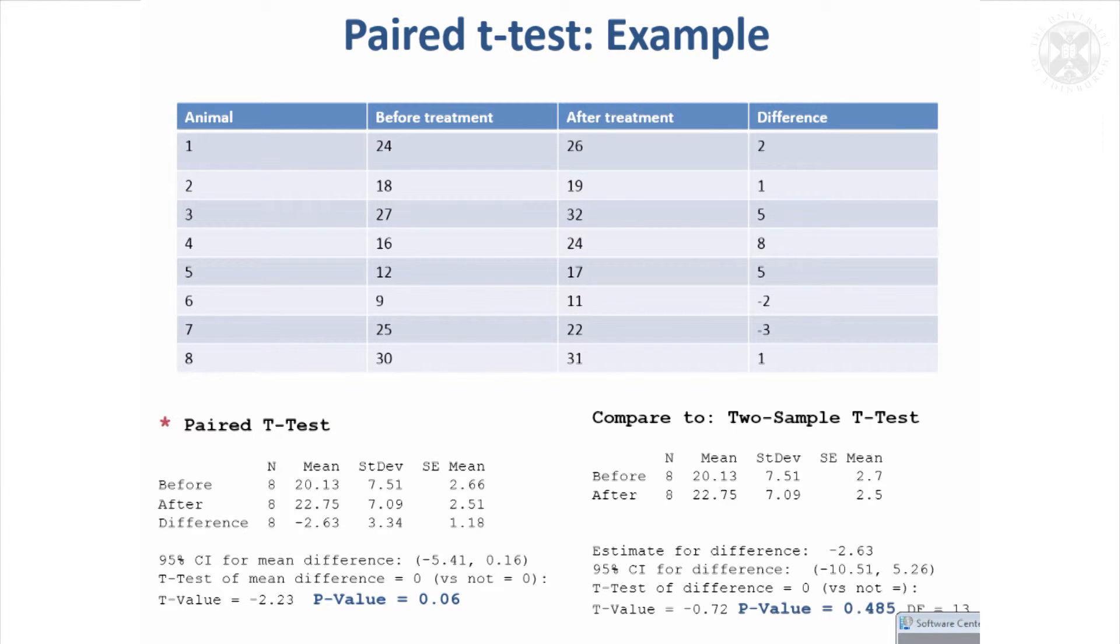It's helpful to look at a bit of data to see how that works. This is some hypothetical data. Imagine you've got eight animals and you've got a measurement taken before treatment, then they have their treatment and another measurement taken after treatment. You can probably see here that the data are constructed so that if they have a high value before treatment, it's high after treatment. There's a lot of correlation before and after.